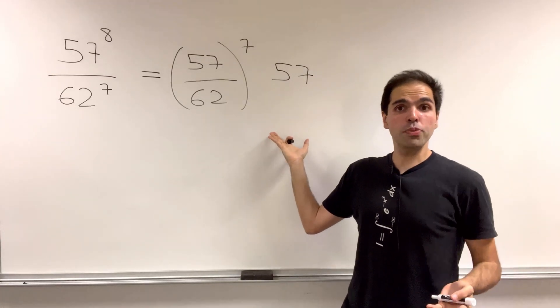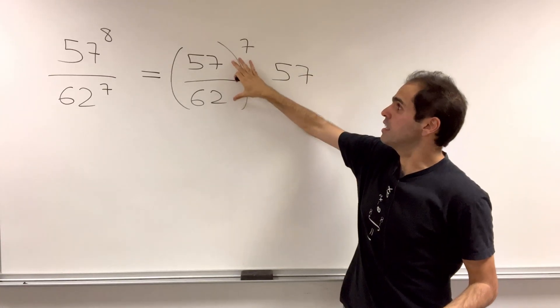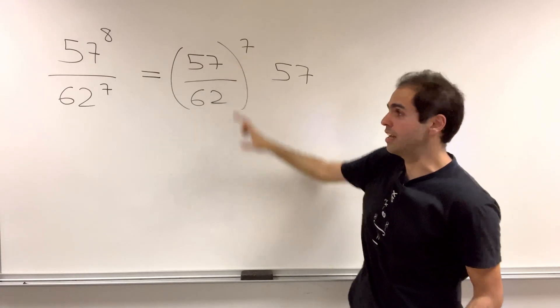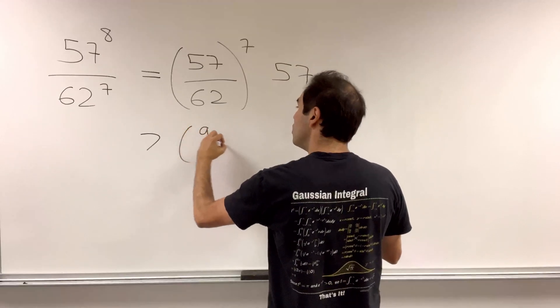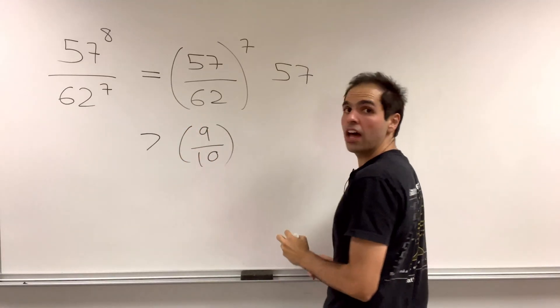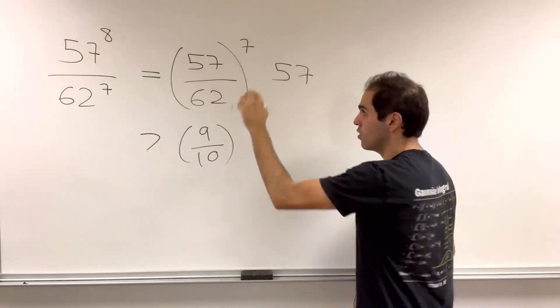That is pretty complicated. Luckily, we can simplify the fraction to the left because 57 over 62 turns out is bigger than 9 tenths using cross multiplication.